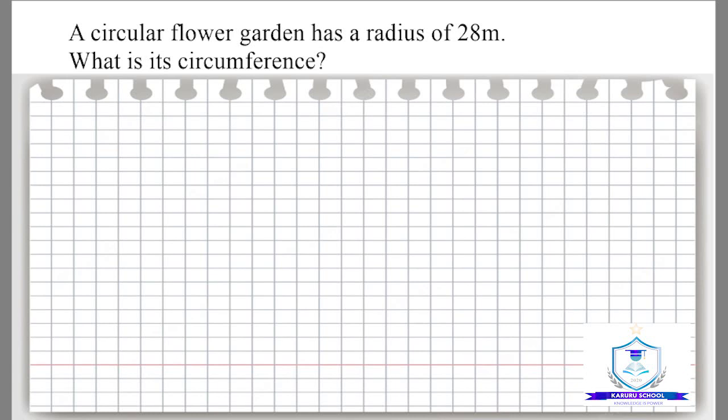To help us do this, we will respond to the question: A circular flower garden has a radius of 28 meters. What is its circumference? To answer this question, we'll start by sketching the flower garden. It is circular in shape.